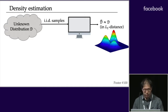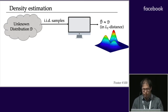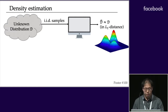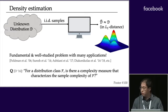The problem we look at in this work is density estimation. There is an unknown distribution D from which we can draw i.i.d. samples, and our goal is to design an algorithm that takes these samples as input and outputs some distribution D-hat that is as close to the unknown distribution as possible — let's say in the L1 distance.